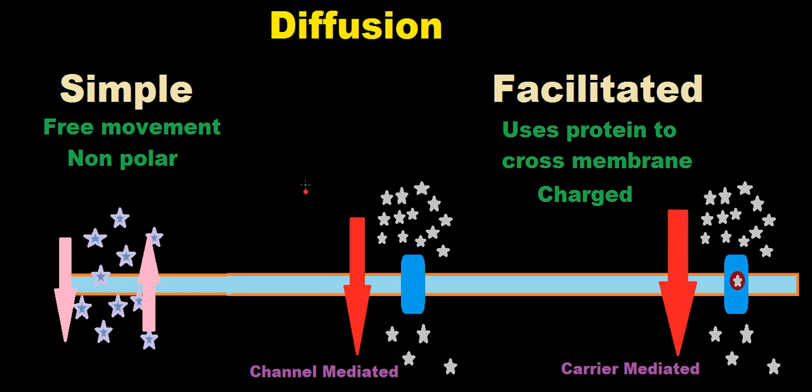There are two different types of diffusion, simple diffusion and facilitated diffusion. First, let's talk about simple diffusion. Simple diffusion means there's free movement. This often happens with ions and molecules that are nonpolar, hydrophobic.